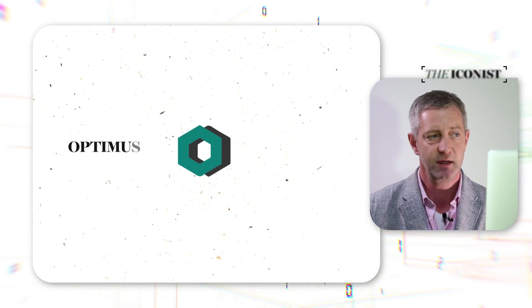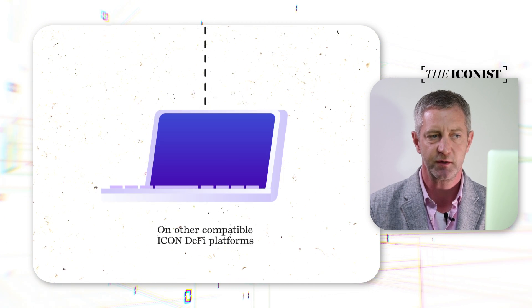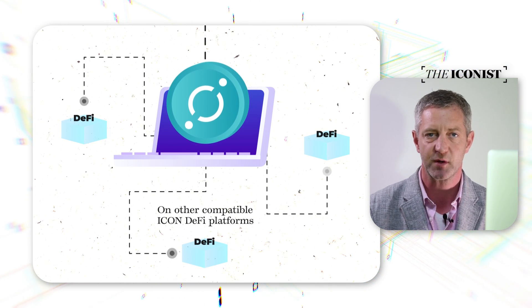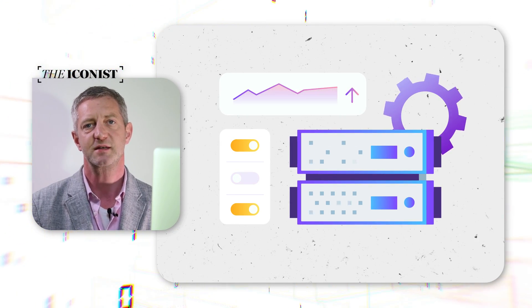You may be wondering what Optimus Yield Optimizer is. In simple terms, it's a service that invests your ICX for you on other compatible Icon DeFi platforms, automated according to the investment strategies that you set. This serves to maximize returns and user convenience while minimizing risk.